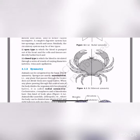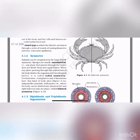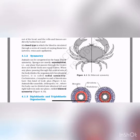Symmetry: Animals can be categorized on the basis of their symmetry. Sponges are mostly asymmetrical — any plane passing through the center does not divide them into equal parts. When any plane passing through the central axis divides the organism into two identical halves, we call it radial symmetry. Coelenterates, ctenophores and echinoderms show radial symmetry. Animals like annelids and arthropods, where the body can be divided into identical left and right halves in only one plane, exhibit bilateral symmetry.